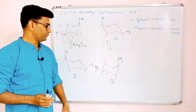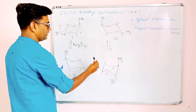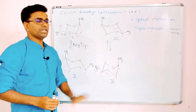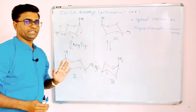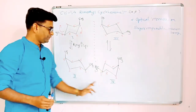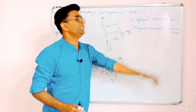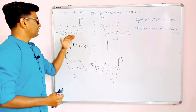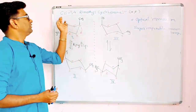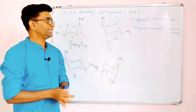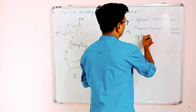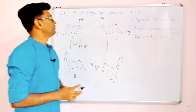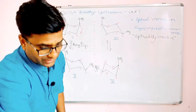Similarly, compound number 2 and compound number 4 — if you rotate molecule number 4 by 180°, you get the same structure as compound 2. So both compounds are superimposable mirror images and optically inactive. This means compounds 1, 2, 3, and 4 — all forms of cis-1,4-dimethylcyclohexane — are optically inactive.